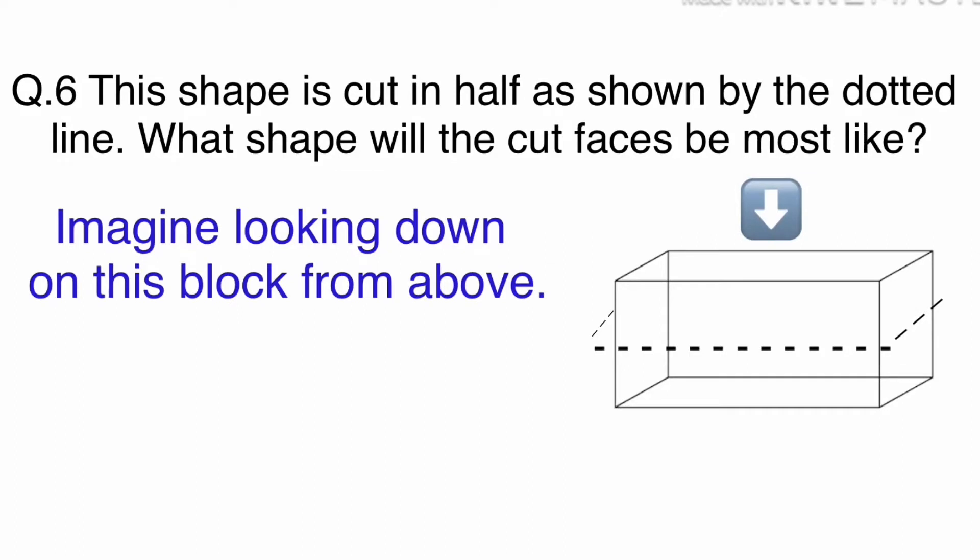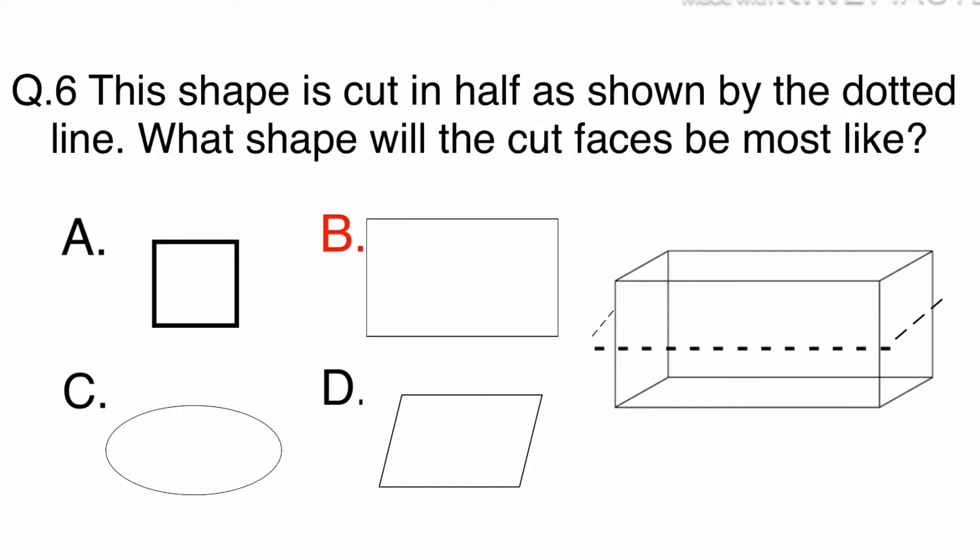Question 6. When the block is cut straight through as shown, the cut faces will be the same shape as the top, a rectangle. The answer is B.